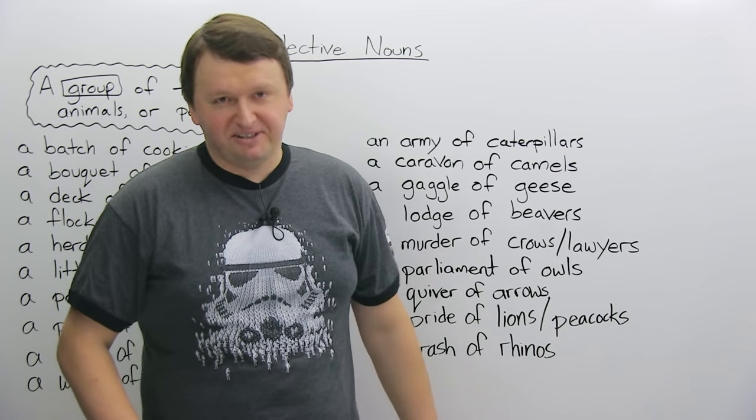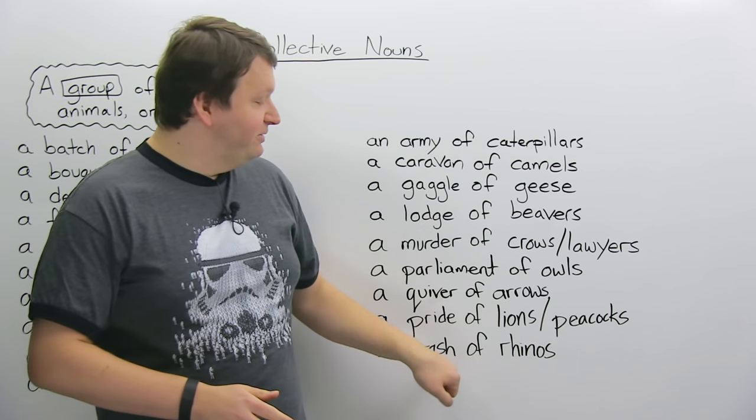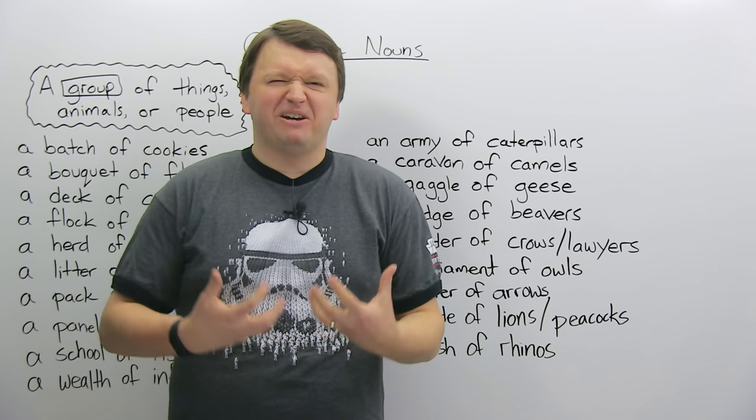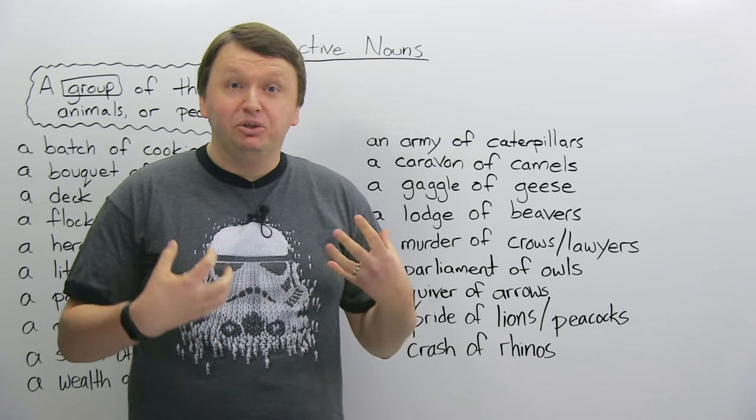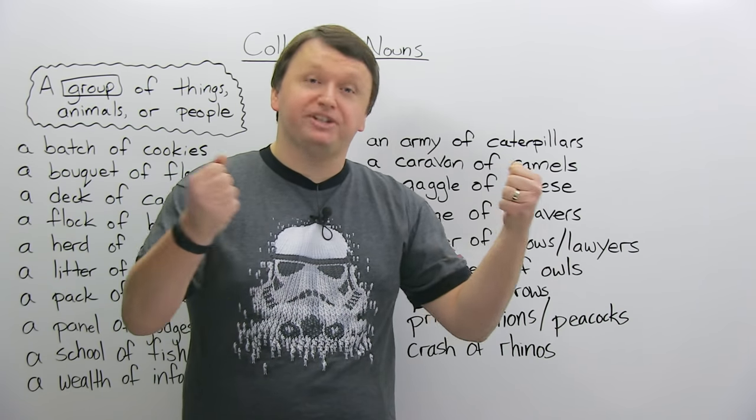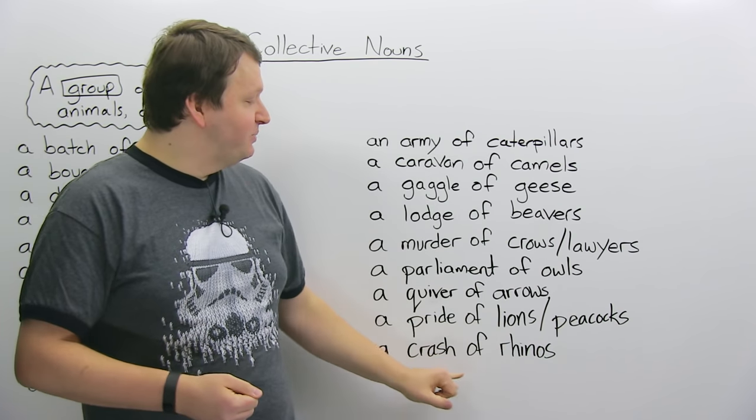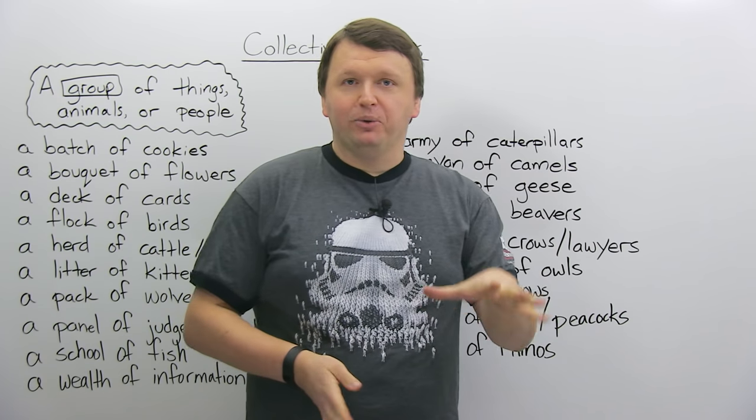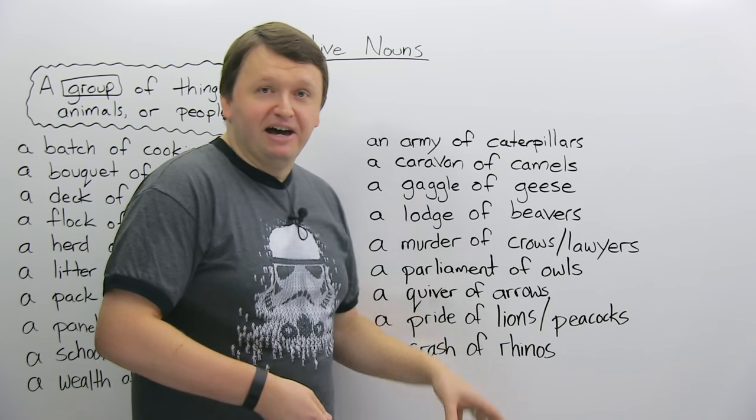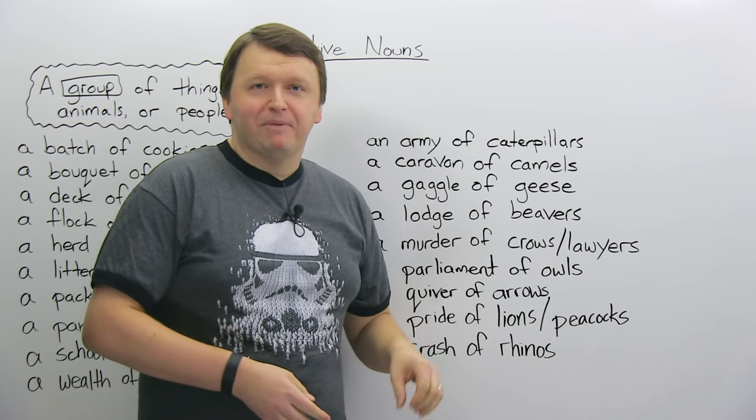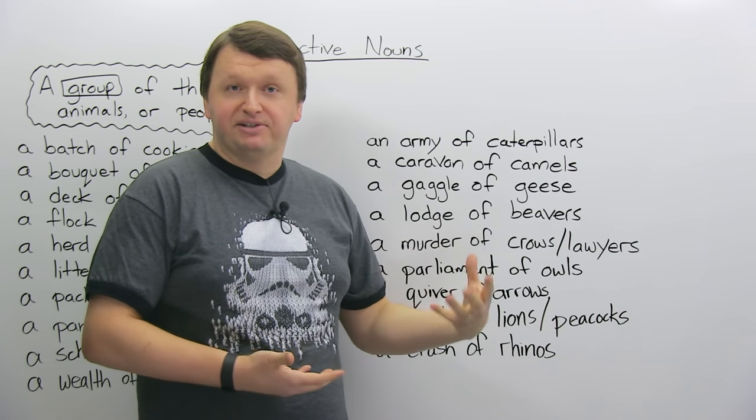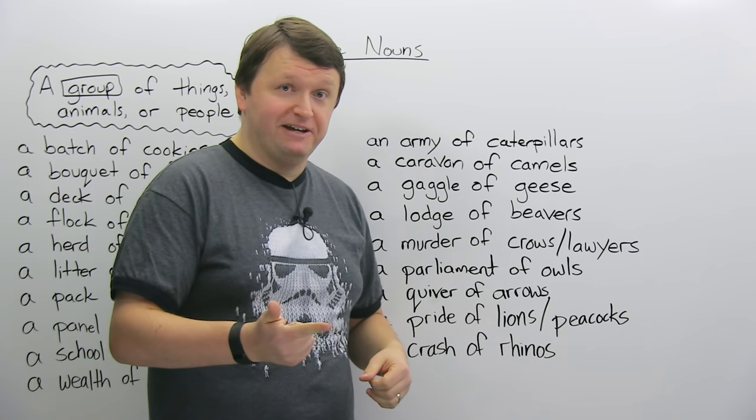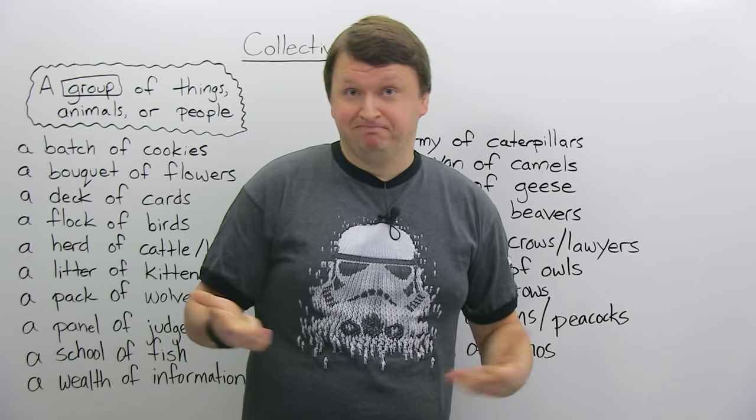And finally, a group of rhinos. A group of rhinos is called a crash, a crash of rhinos. So rhinos are very big, very tough, very strong. And you can imagine them, like, just destroying and crashing into things. And that's why a group of rhinos is called a crash of rhinos. And for my fellow nerds out there, if you play the game Magic the Gathering, there actually is a card called Crash of Rhinos. It has eight attack and four defense and trample ability. Anyway.